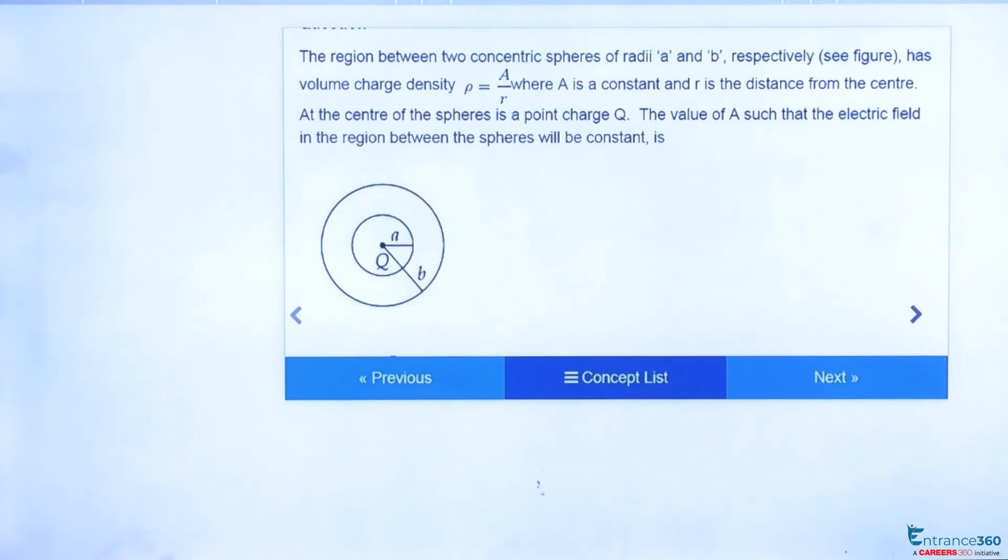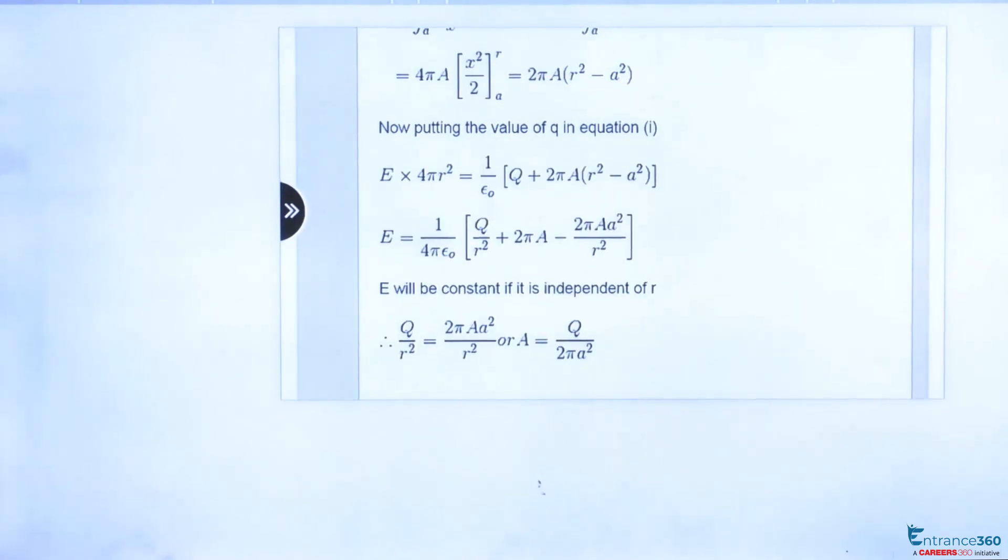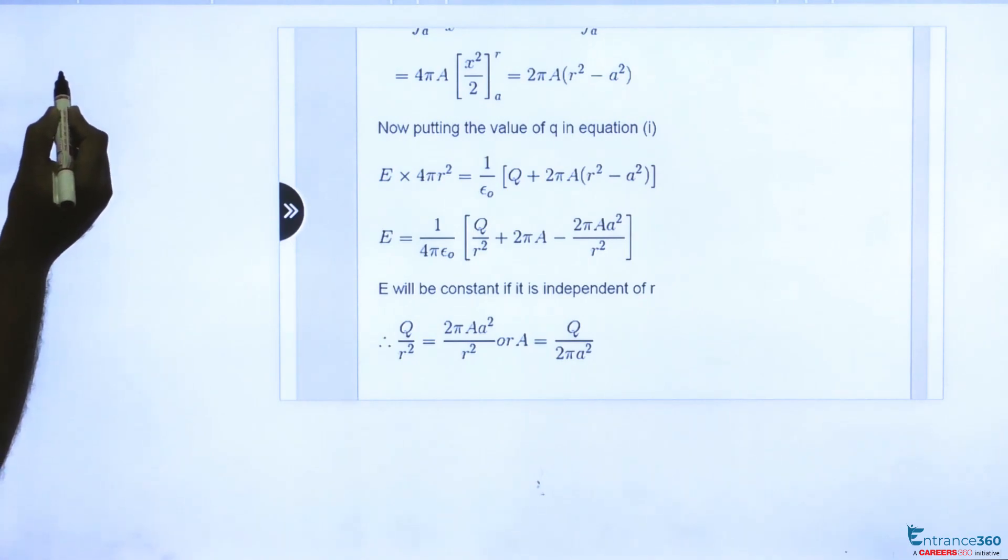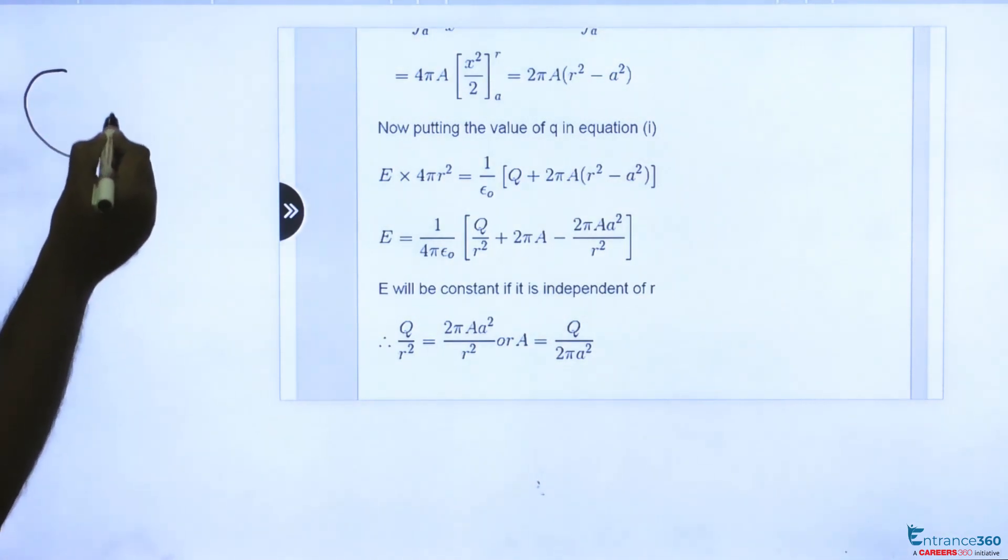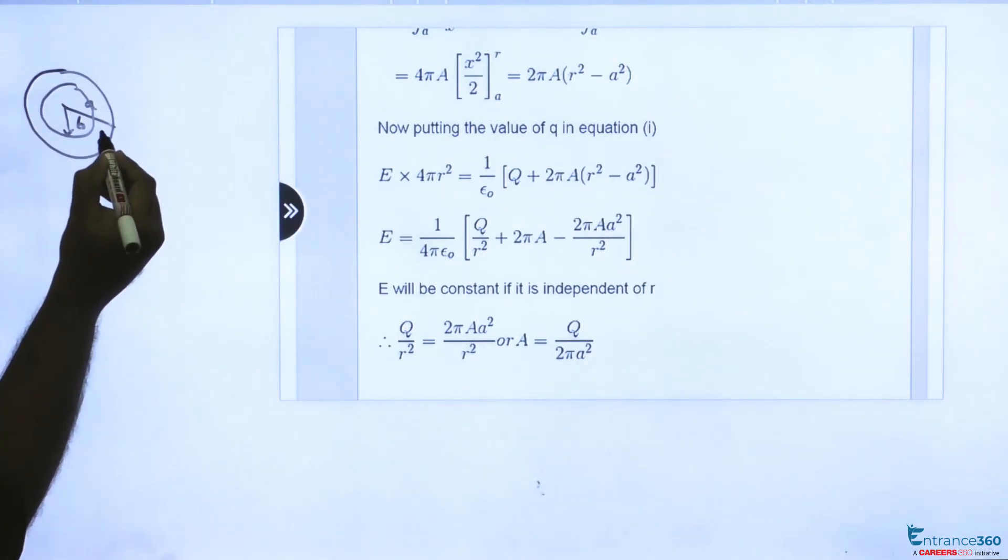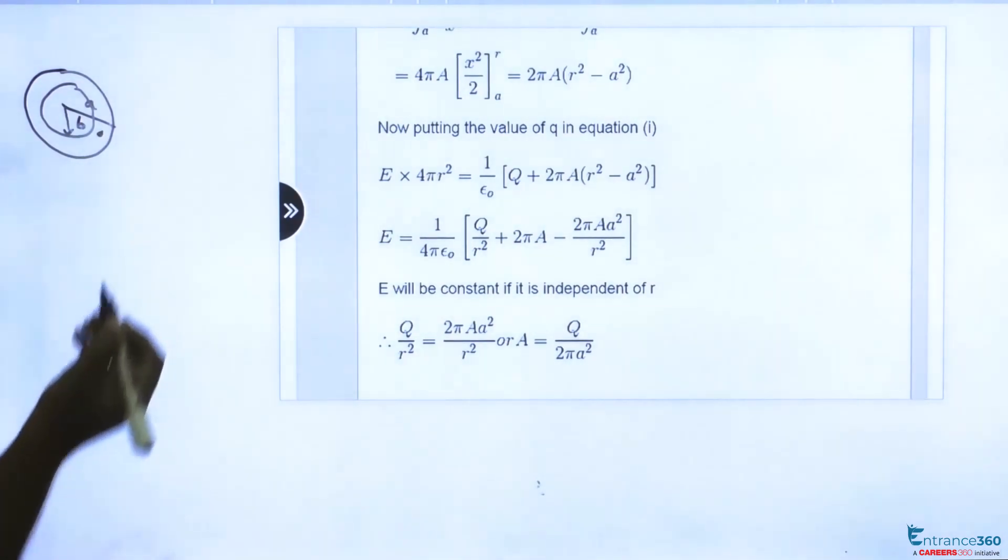So let's see how to solve this. In the question, given two spheres of radius A and B, we have to find the electric field between this point. And these are solid spheres.